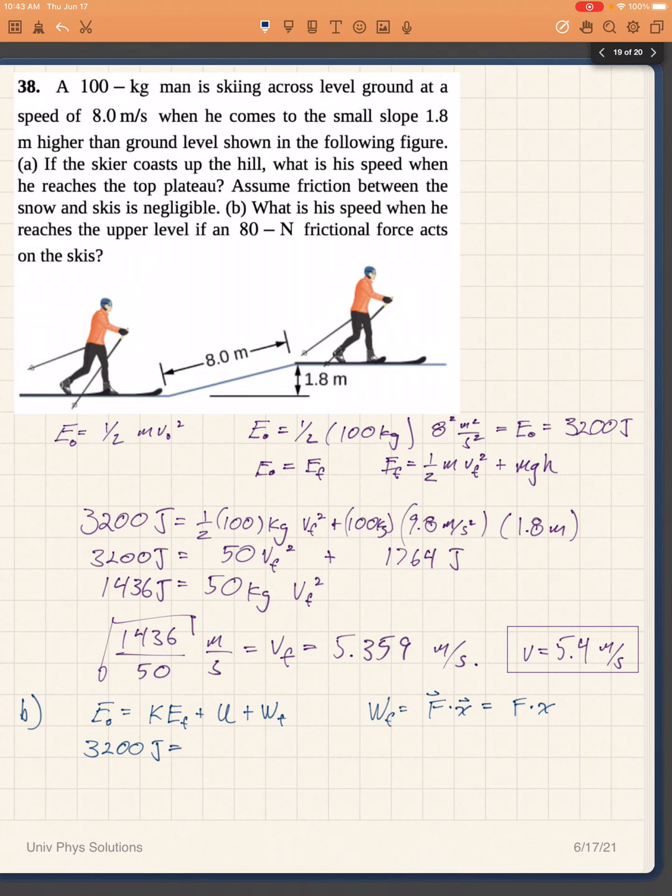So then I have the initial energy, 3200 J, has to be equal to the final kinetic energy, which will be one half times 100 times the final velocity squared, plus mgh, which in this case will be 1764 J as we found in the previous problem, plus the force, which is 80 Newtons, times the displacement, which is 8 meters. Now 80 Newtons times 8 meters is 640 J.